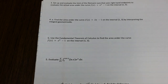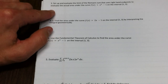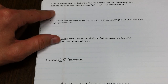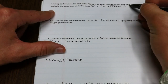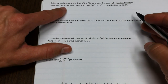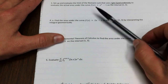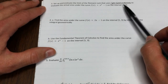We have a few review problems here looking at area under curves and the definite integral approximating that. The first problem says set up and evaluate the limit of the Riemann sum that uses right-hand endpoints to evaluate the actual area under the curve f of x equals x squared minus 1 on the interval from 1 to 3.